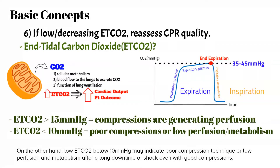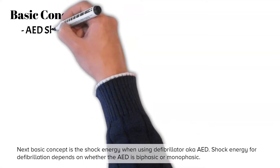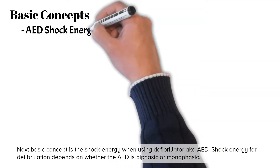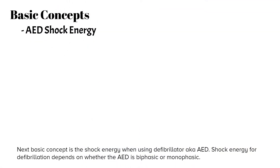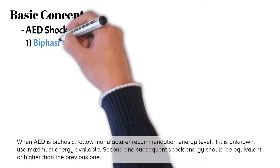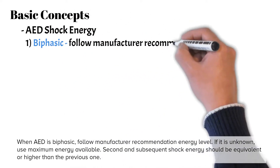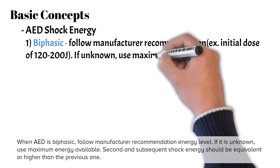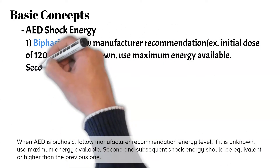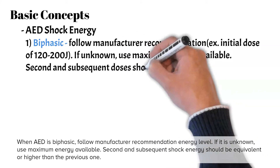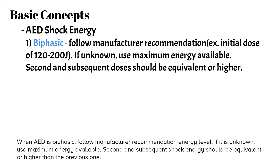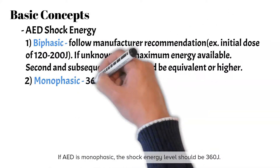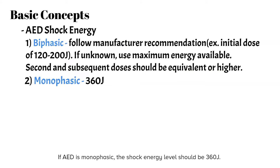The next basic concept is shock energy when using a defibrillator, also known as AED. Shock energy for defibrillation depends on whether the AED is biphasic or monophasic. When the AED is biphasic, follow the manufacturer's recommended energy level; if unknown, use the maximum energy available. Second and subsequent shock energy should be equivalent or higher than the previous one. If the AED is monophasic, the shock energy level should be 360 joules.